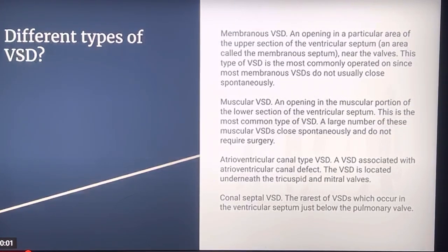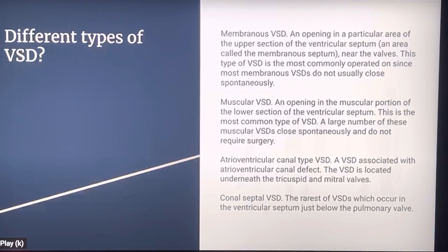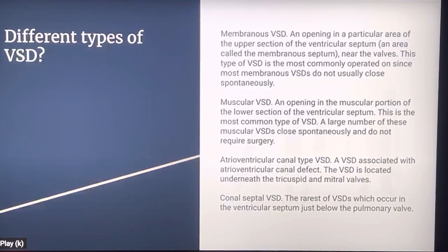The different types of VSD. Membranous VSD is an opening in a particular area of the upper section of the ventricular septum, an area called the membranous septum near the valves. This type of VSD is the most commonly operated on, since most membranous VSDs do not usually close spontaneously.